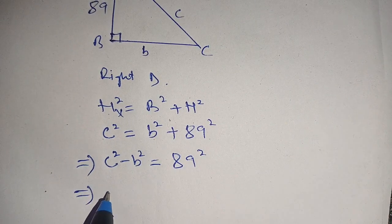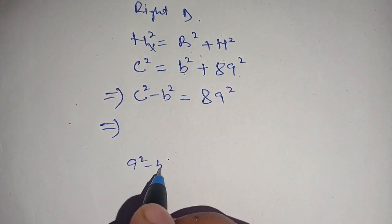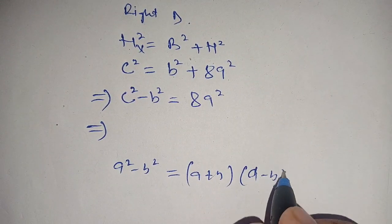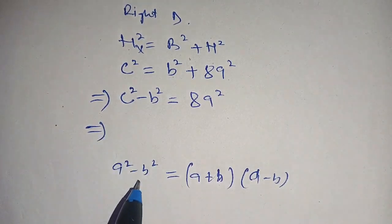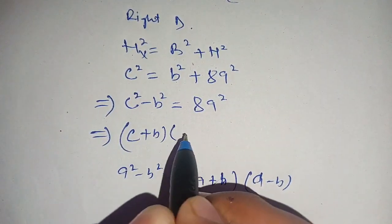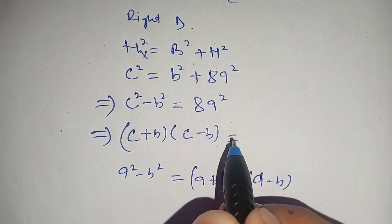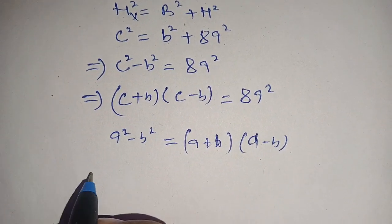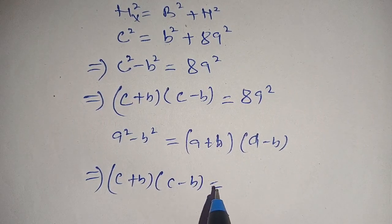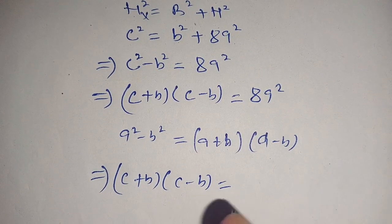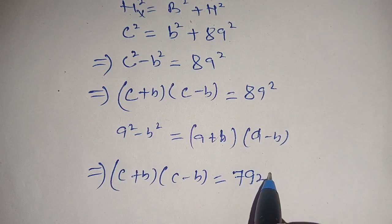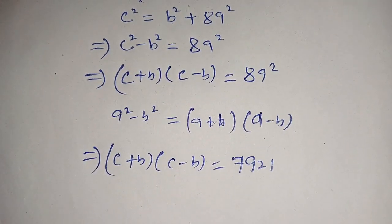We know that a squared minus b squared is equal to (a + b)(a − b). Here a is c and b is b, and using this identity we get (c + b)(c − b) is equal to 89 squared. In the next step, 89 squared is equal to 7921.